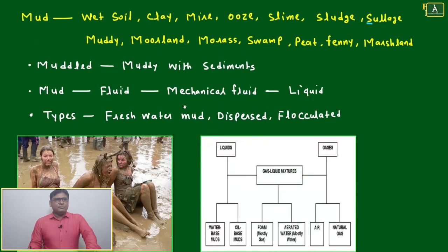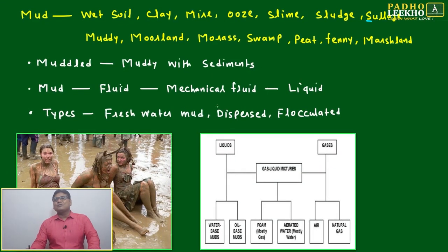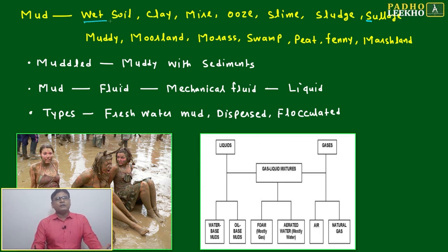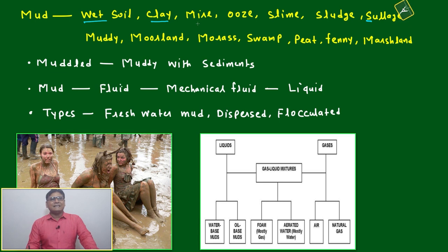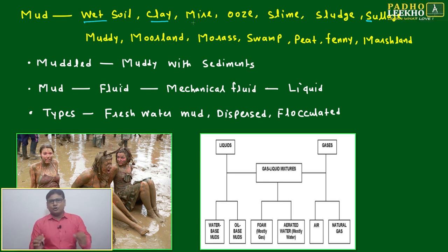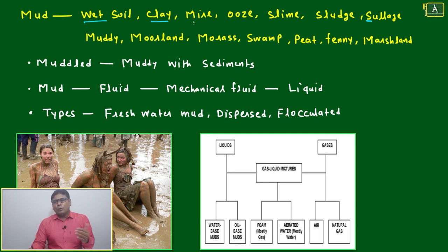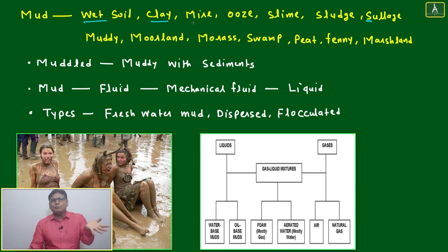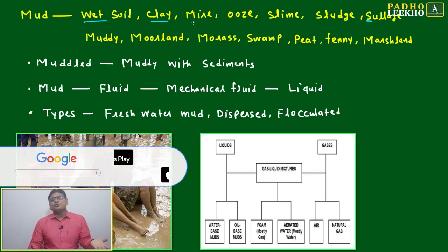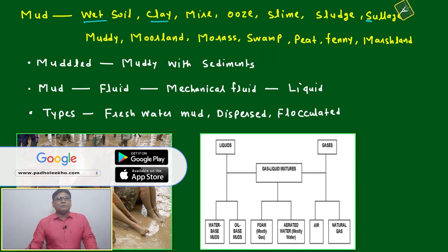What is mud? If you are just mixing water and soil, that is called mud or wet soil. Another category is clay — clay is a special category of mud where the combination, you can say percentage, of soil and water will be in a different way. In the common definition of mud, water percentage will be more, but in clay, soil percentage will be more.